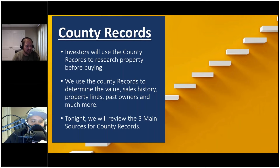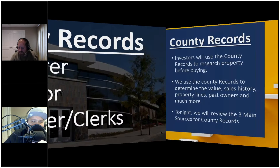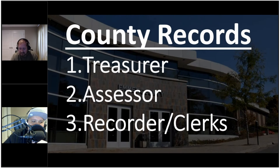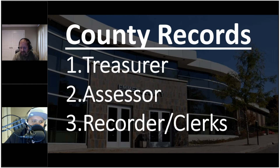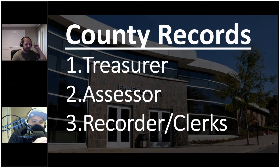There are a couple of different types of records that we generally access. Those records are usually either the treasurer or the tax collector, and those records are related to things like the payment of taxes. We also access assessor records, which are related to the property assessment and how it's valued — those are incredibly relevant and valuable to us. Then we also access the recorder's or clerk's records, sometimes called official records or legal records. Deeds are in the same office.